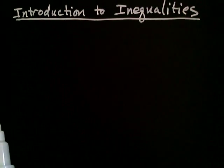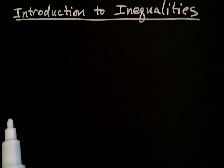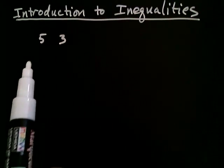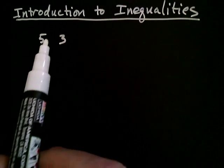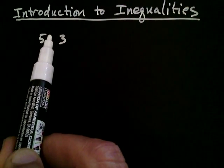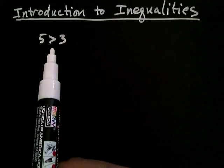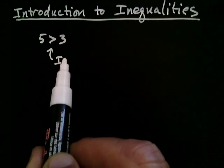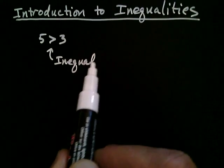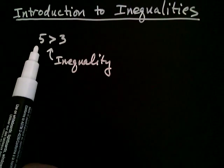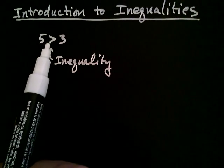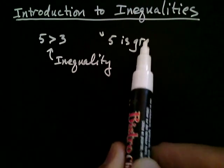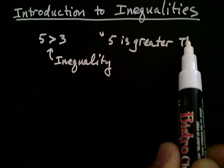Often in math, we want to consider the relationship between two numbers that might not be equal to each other. So if you have five and three — I know five is not equal to three, but we like to often say more than that. We write this symbol in math — it's an arrow pointing to the right, and this is called an inequality symbol. This is read from left to right: five is greater than three.